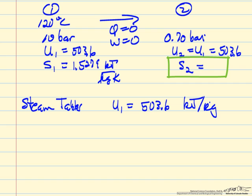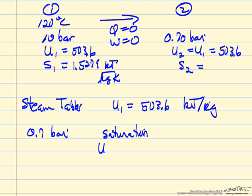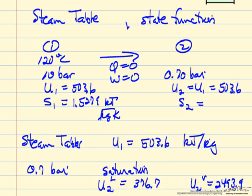So we go to the steam tables at 0.7 bar, and at 0.7 bar we find that at saturation conditions, if we look at the saturation table, if it were a liquid at that pressure, this would be its entropy in kilojoules per kilogram. If it were a vapor, Ug would be 2494.1. This means we must have a mixture of liquid and vapor, where the majority is liquid.